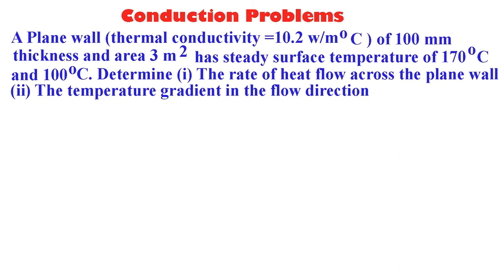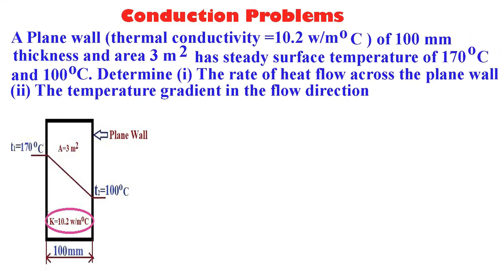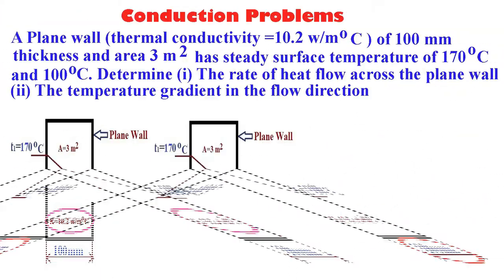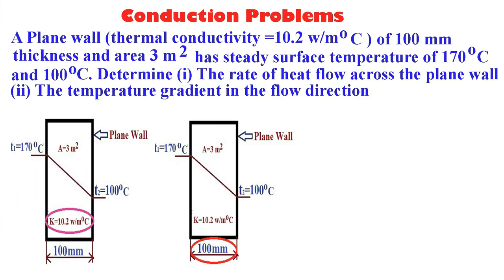Next question: a plane wall with thermal conductivity 10.2 watt per meter degree centigrade, 100 mm thickness, and area 3 meter square has steady surface temperatures of 170 degrees centigrade and 100 degrees centigrade. Determine the rate of heat flow across the wall and the temperature gradient in the flow direction. First, we indicate the thermal conductivity 10.2 watt per meter degree centigrade in the figure, and the 100 mm thickness of the plane wall.